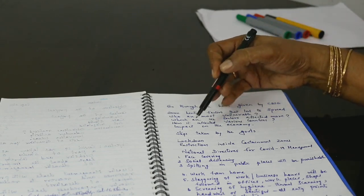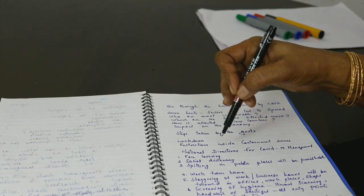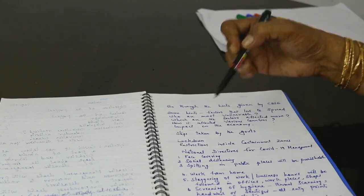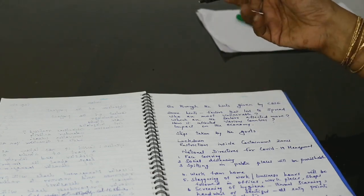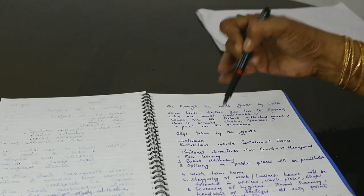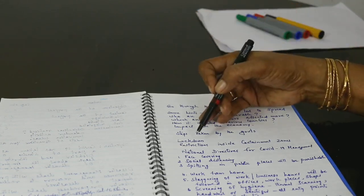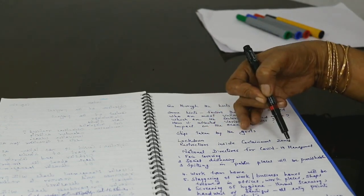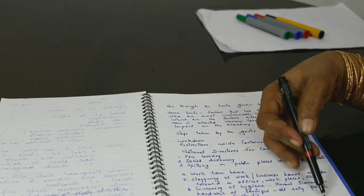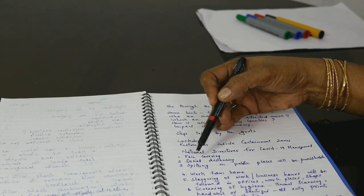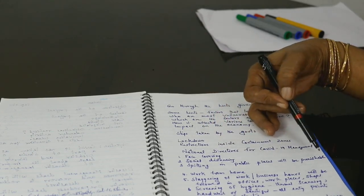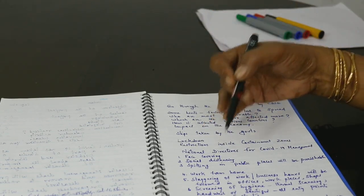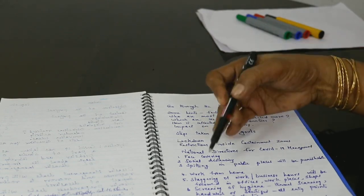Then steps taken by the governments. Regarding steps taken by the governments, how to counteract, how we can control the spread of this COVID. Several measures have been taken by the government to uplift the people from the vulnerability or from the poverty. So the steps taken by the government to prevent the spread. There is lockdown, the restrictions inside containment zone. Then national directives for COVID-19 that is published on 30th September is that face covering, social distancing, spitting in public places will be punishable. It is already there from February, March onwards. Face covering that is mask we have to use, social distancing, spitting in public places will be punishable.